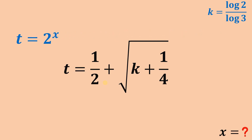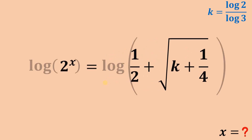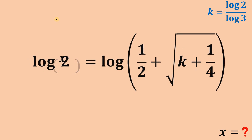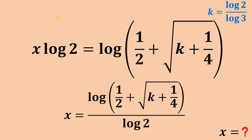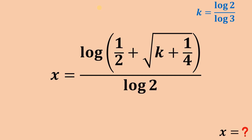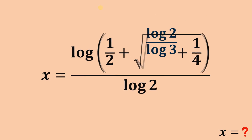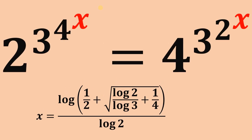Since t is 2 raised to the power of x, we replace t with 2 raised to the power of x. Finally, to solve for x, take the logarithm of both sides. Bring the exponent x to the front, then divide both sides by logarithm of 2. So x equals logarithm of 1 half plus square root of k plus 1 over 4, all over logarithm of 2. Substituting back k as logarithm of 2 over logarithm of 3, that is the value of x. The approximate value is 0.5246.